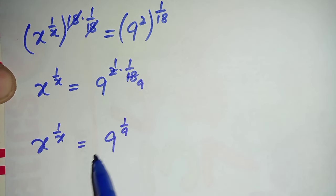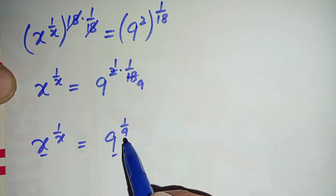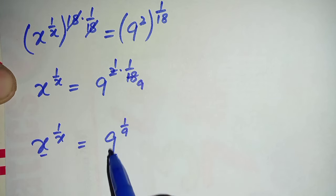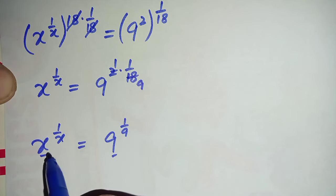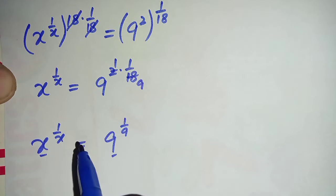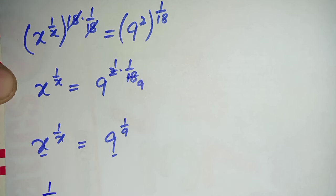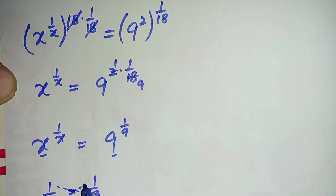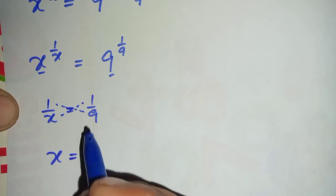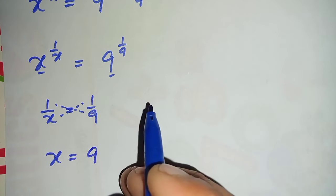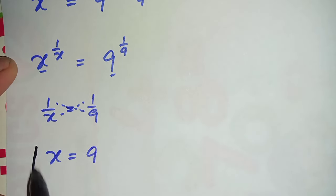Now look at both sides of this equation — the bases are the same form as the number in the denominator of the power. So we can compare both bases and powers to find the unknown. Comparing the powers: 1 over x is equal to 1 over 9. Cross-multiplying, x times 1 equals 9 times 1, so finally x is equal to 9.